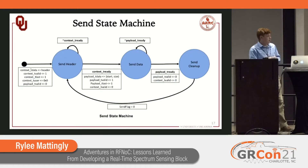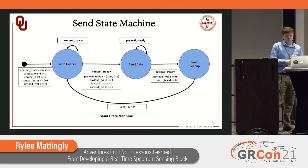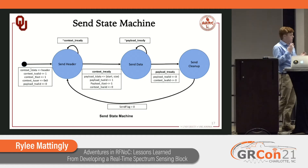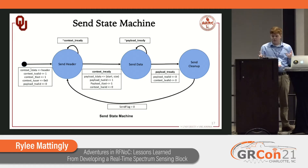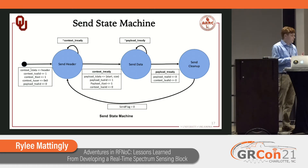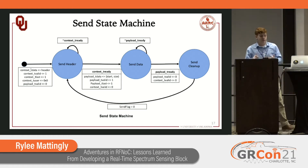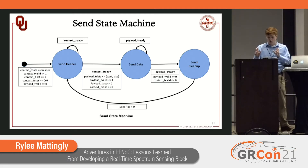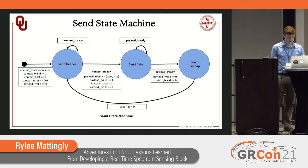The send state machine is much simpler. We have our send flag that we assert when we encounter TLAST. Then we can send our header out, wait for context T-ready to go high to indicate the recipient block was ready to consume that word, before moving on to send our two data words. Then we do our cleanup: set our send flag low, reset our bus, and wait for the next packet to complete.